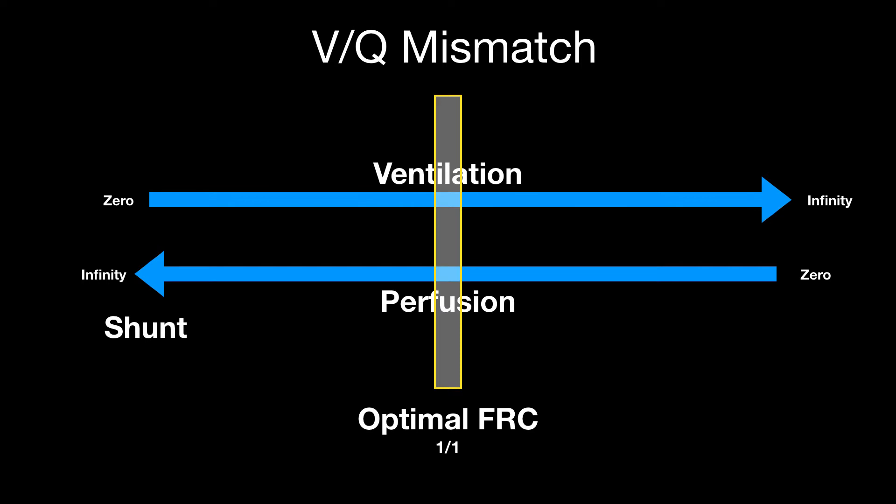On the other side of the continuum, where you have infinite ventilation and zero blood flow, you have dead space. Dead space happens normally in the trachea, but you can have increased dead space where you have a ton of ventilation and zero blood flow. Think of diseases that cause obstruction with over-enlarged alveoli, like COPD or asthma — in some of those cases you get pathologic dead space.